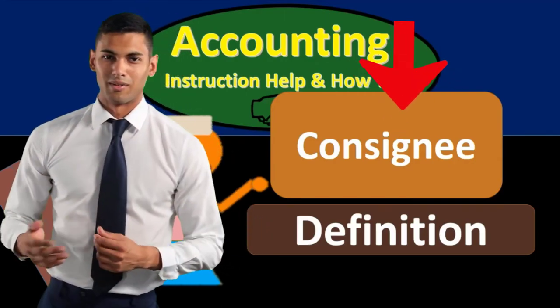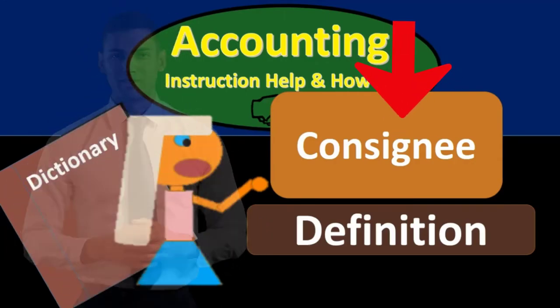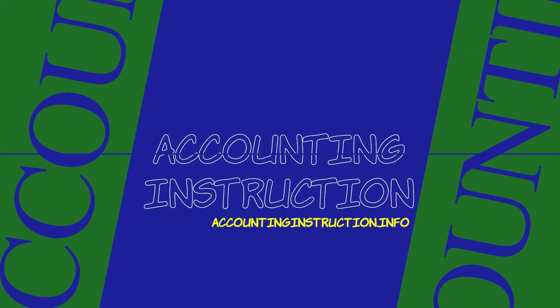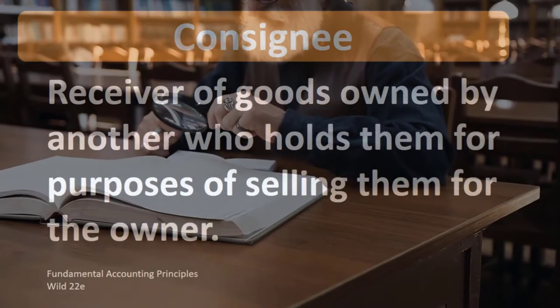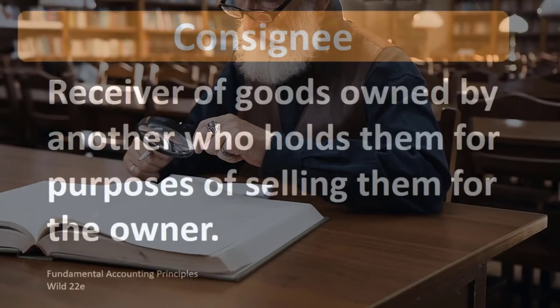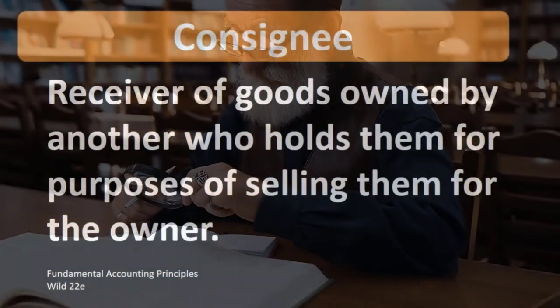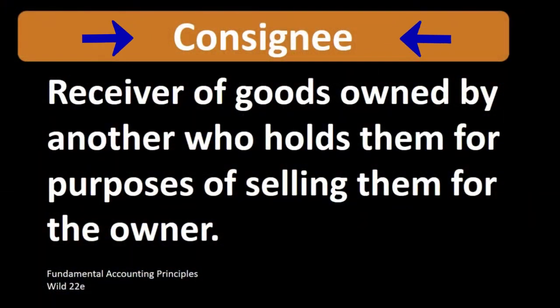In this lecture we will define consignee. According to Fundamental Accounting Principles, 22nd edition, the definition of consignee is: receiver of goods owned by another who holds them for purposes of selling them for the owner.